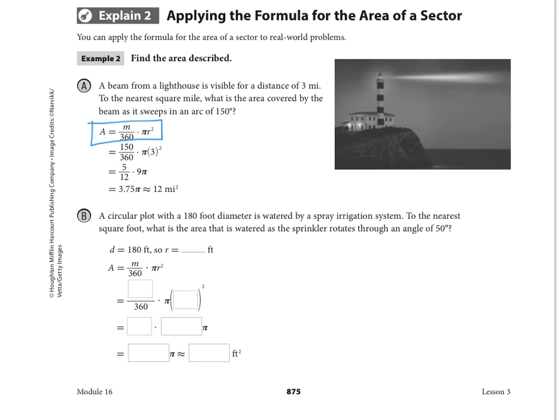We're looking for five-twelfths of 9π. Or if we do 5 times 9 divided by 12, we get 3.75π exactly, or an approximation of—and this is to the nearest square mile, so that's the whole unit—12 miles squared.